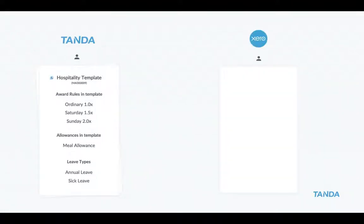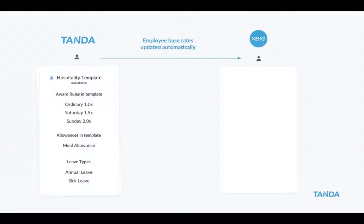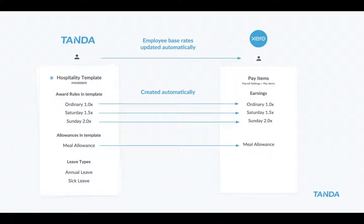In terms of the way that the information flows through to Xero, if you're on a managed award template, there's a button that syncs all the template information into your Xero account automatically, so it will create the relevant rules. The first thing it does is update base rates on employees to match those of the award. Then it will create what are called pay items in Xero — they're called award rules in Tanda. Those will get created as well as allowances.